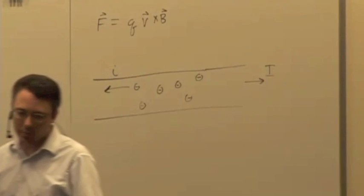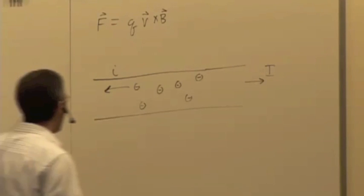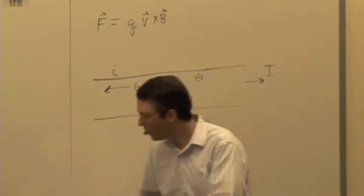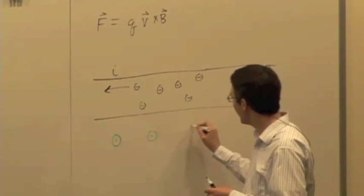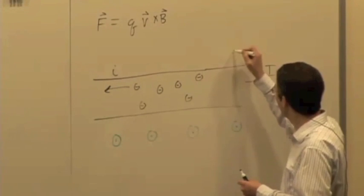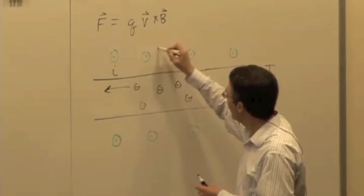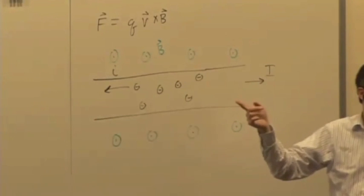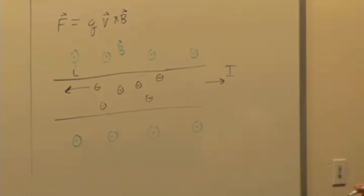And we want to think about if we place this wire in the presence of a magnetic field, what's going to happen to the electrons? Let's say we have a magnetic field pointing out towards us, and it's important to keep in mind, this isn't the magnetic field due to the current in the wire, this is the magnetic field due to something else. We just happen to have a uniform magnetic field here.